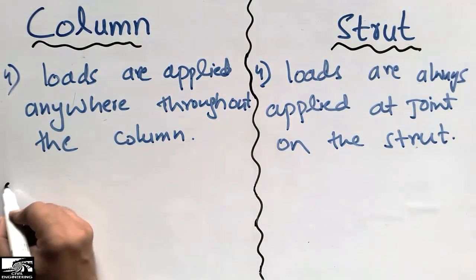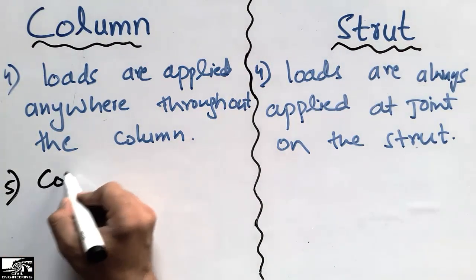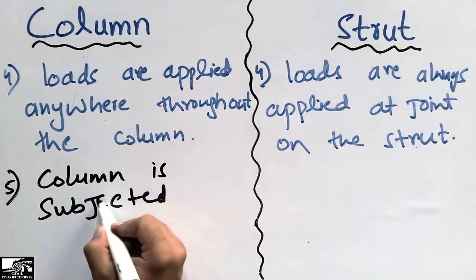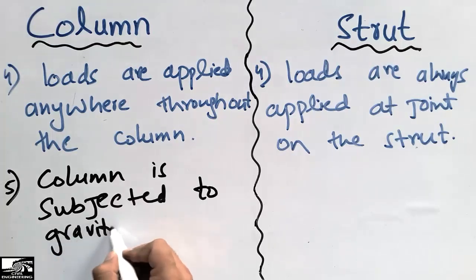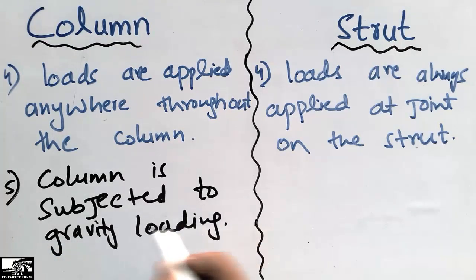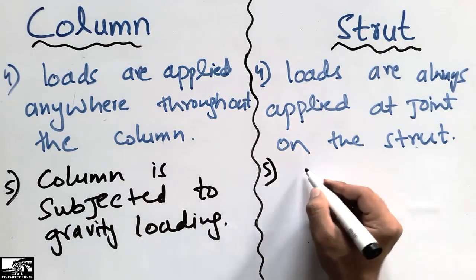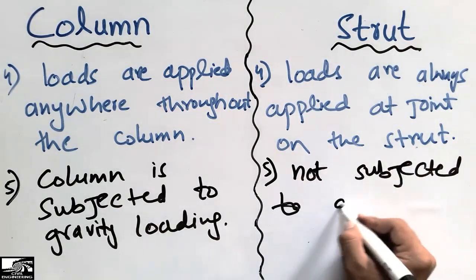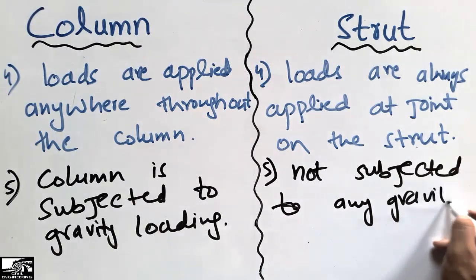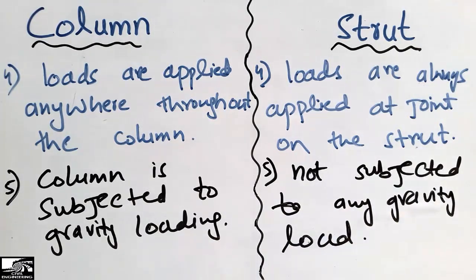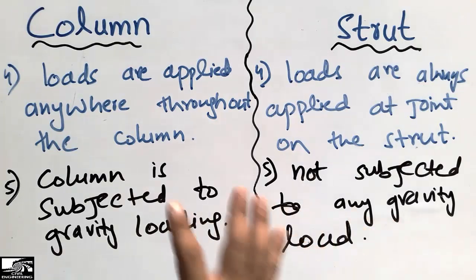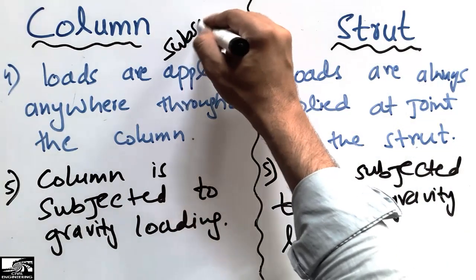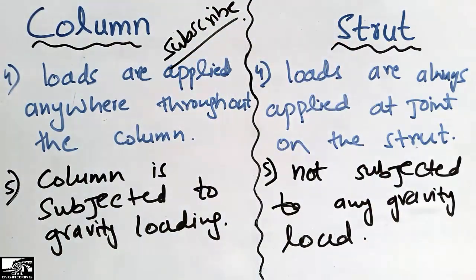The fifth and last difference is that the column is subjected to gravity loading and is designed for gravity loading, while the strut is not subjected to any gravity loading. So these were the differences between the column and the strut. For more videos, don't forget to subscribe to our channel — I will upload daily Seven Engineering videos. Thank you for watching.